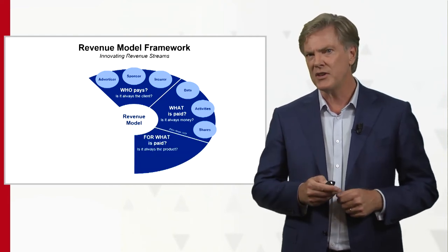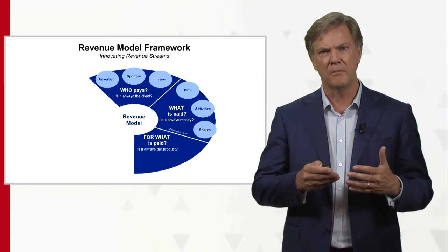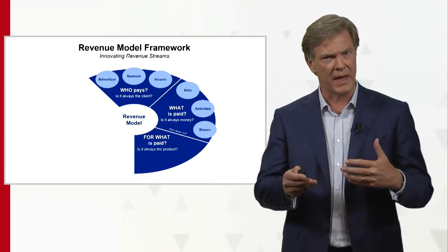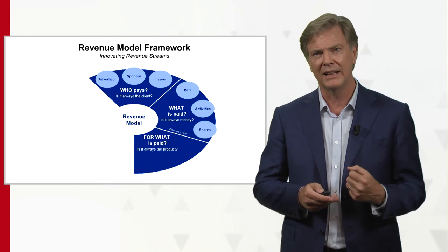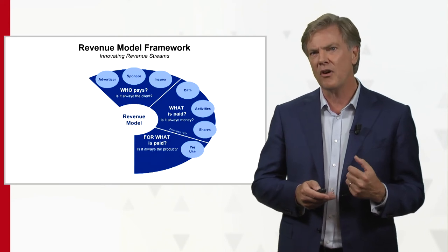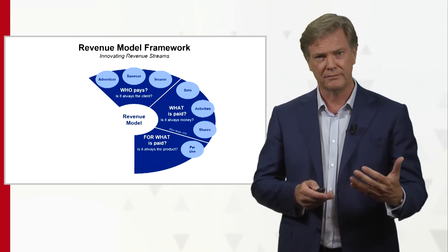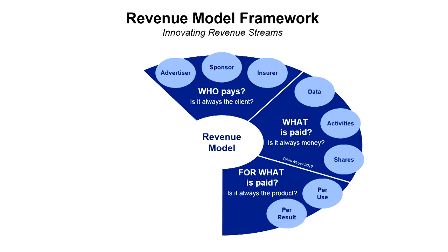The third question is: what is it that's actually being paid for? Are they paying for the product or the service itself that you're receiving? Or are you being paid per use? Maybe you're being paid for a final result, or maybe for certain add-ons that are provided later on. Think through whether it's always the product or the service that you want to get paid for.